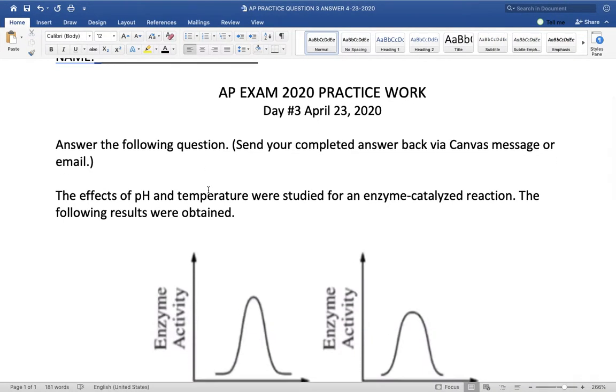All right, hey, AP Bio students, I want to go through two of our answers: the answer to question three involving enzymes, and then we'll go through the answer to question four involving photosynthesis.